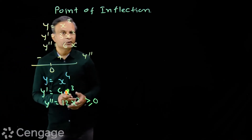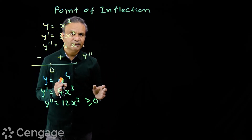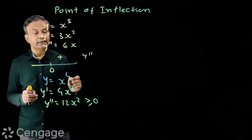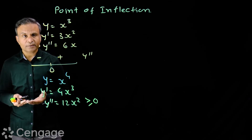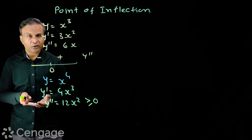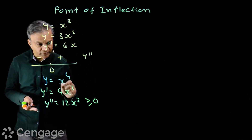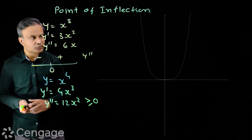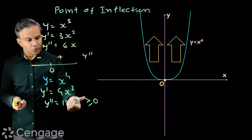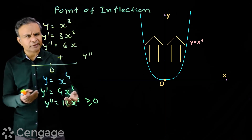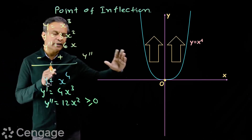The required condition for a point of inflection is that the second derivative must change its sign. The curve will change its concavity only if the second derivative changes its sign. Here at x = 0, the second derivative vanishes but the graph remains concave upward for all x, since the second derivative is positive for all x other than 0.